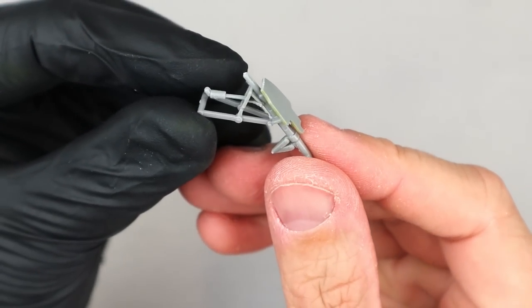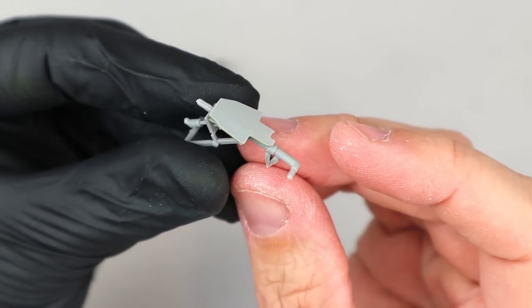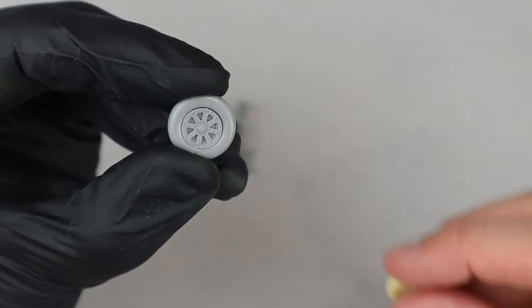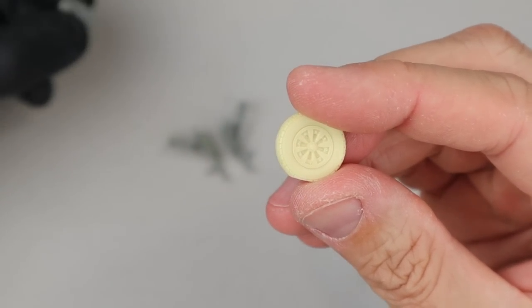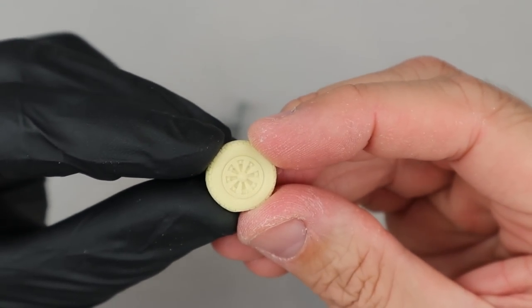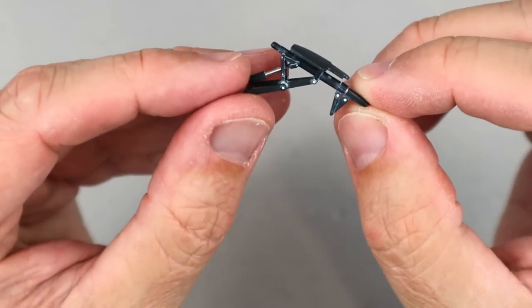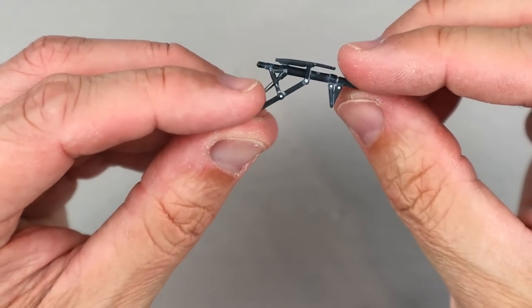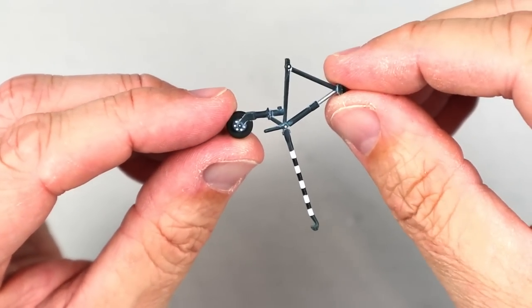The landing gear is a multi-part assembly and goes together easy enough. The kit wheels are nice, but they are not correct for the Argentinian Corsairs. Those aircraft use a late style stamped hub. Fortunately, Ultracast offers a really nice set that not only has the right hub detail, it also has some really nice block tread. I painted and weathered the landing gear and wheels following the same processes as before. I painted the arrestor hook with the black and white stripes and this really helped add more detail to the finished model.